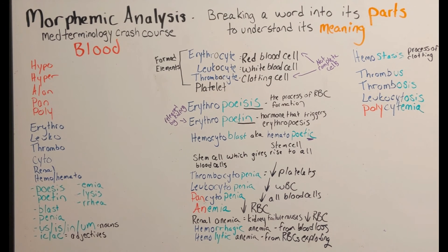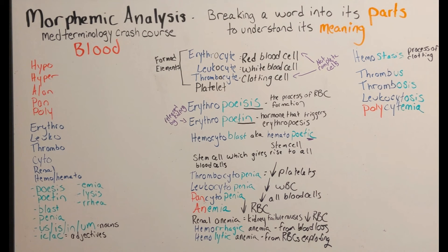Thrombus and thrombosis are both related to clots. A thrombus is a blood clot where you don't want it. Thrombosis is a condition involving blood clots where you don't want them — for example, deep vein thrombosis means you have blood clots in your veins where you don't want them. Leukocytosis is an excess of white blood cells, possibly due to having an infection.